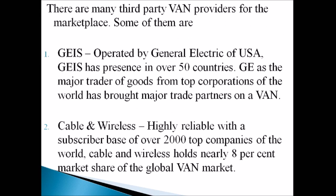There are many third-party VAN providers in the marketplace. The first is GEIS, operated by General Electric of USA, with presence in over 50 countries. GE, as a major trader of goods from top corporations worldwide, has brought major trade partners onto a VAN. The second is Cable and Wireless, highly reliable with a subscriber base of over 2,000 top companies worldwide, holding nearly 8% market share of the global VAN market.